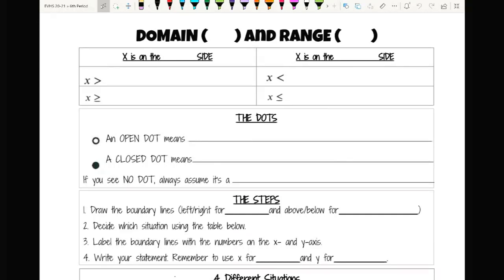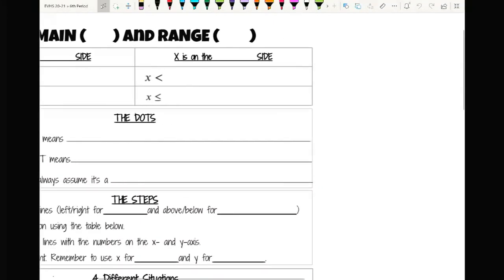Lesson 6-4, domain and range. Now, domain and range is something that we've covered before. We're just going to hone in and start doing it for continuous functions. Back in unit 1, we did discrete, which is where we had scatter plots.